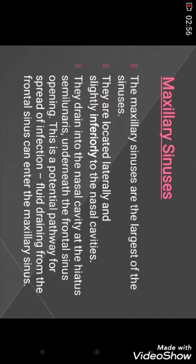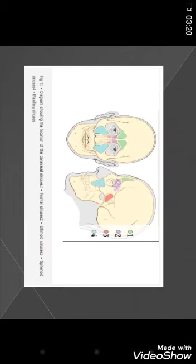The maxillary sinuses are the largest of the sinuses. Located in the maxillary region, they sit laterally and slightly inferior to the nasal cavity. Their main function is to provide a potential pathway for spread of infection; fluid draining from the frontal sinus can enter the maxillary sinus. In the diagram, the frontal sinus is shown in green, ethmoidal sinus in purple, sphenoid sinus in red, and maxillary sinus in blue.